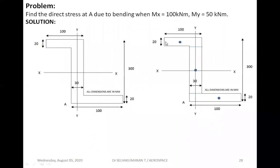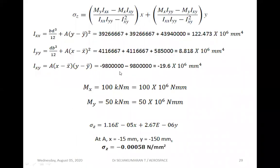For Ixy: A1×(x1 − x̄)×(y1 − ȳ). For section 1, x − x̄ is negative (second quadrant) and y − ȳ is positive. For section 2, both distances are zero, so it contributes nothing. For section 3: A3×(x3 − x̄)×(y3 − ȳ), where x − x̄ is positive and y − ȳ is negative. This gives Ixy = −19.6 × 10⁶. Never assume Ixy = 0 for an anti-symmetric section — you will never get Ixy = 0 for an anti-symmetric section.